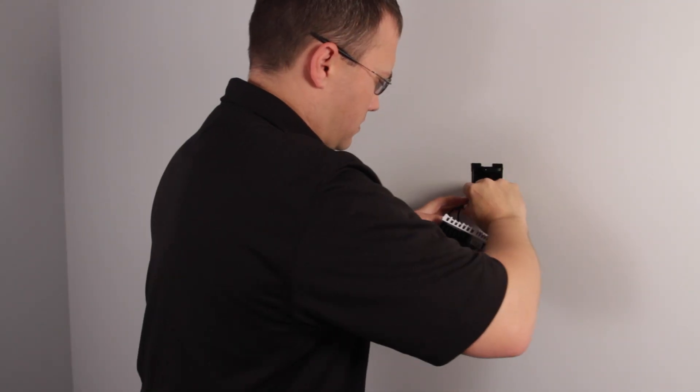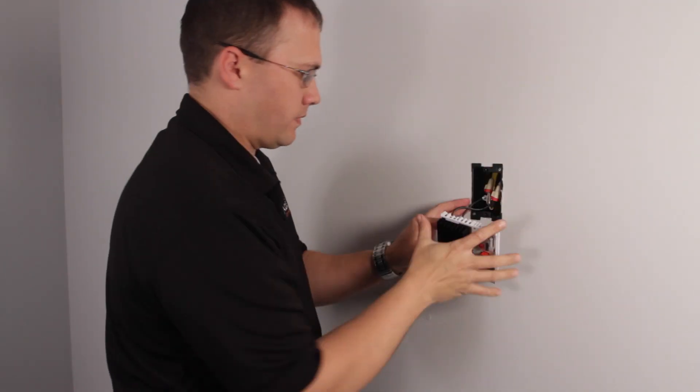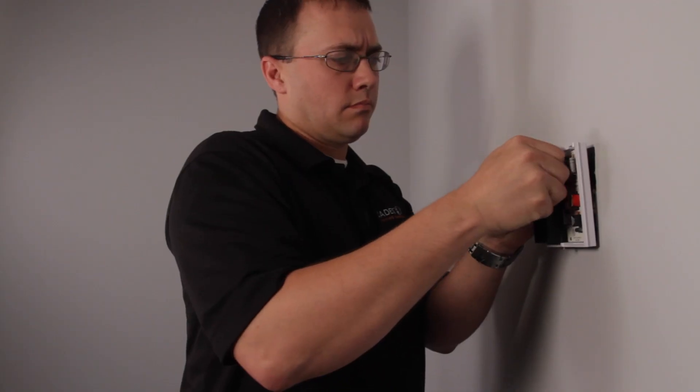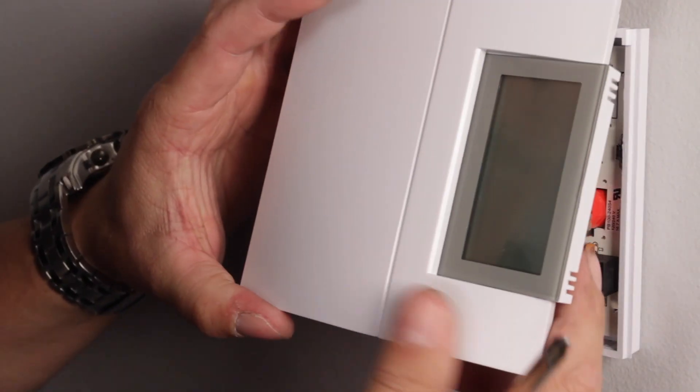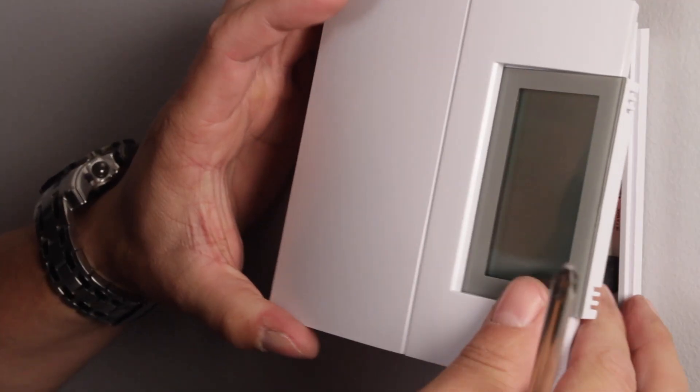Carefully tuck all wires into the J-Box and secure the sub base with the provided screws. Now attach the thermostat to the sub base and secure with the set screw.